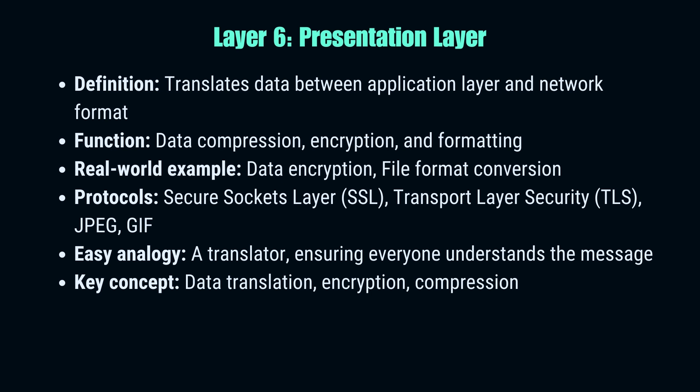The presentation layer is our data translator and formatter. Its main job is to make sure that the data from the application layer of one system is readable by the application layer of another system. This involves three main tasks: translation, encryption, and compression. It might need to translate between different data formats, encrypt data to keep it secure, or compress it to make it travel faster. Protocols like SSL (Secure Sockets Layer) and TLS (Transport Layer Security) work here, as well as data formats like JPEG and GIF. This layer ensures that regardless of differences between devices, the data remains usable.